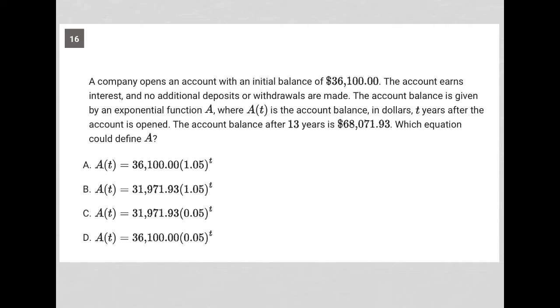This question says a company opens an account with an initial balance of $36,100. The account earns interest and no additional deposits or withdrawals are made. The account balance is given by an exponential function A, where A(t) is the account balance in dollars, t years after the account is opened. Okay, so t is years.